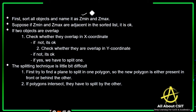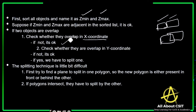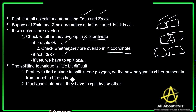Sort all objects and label them with z-minimum and z-maximum values. If z-minimum and z-maximum are adjacent in the sorted list, they are not overlapped and can be painted easily. If two objects are overlapped, first check whether they overlap in the x coordinate — if not, no problem. Then check the y coordinate — if not overlapped, it's fine. If they overlap in x or y, we must split one polygon. Find a plane to split the polygon so the new polygon is either in front of or behind the other. If polygons intersect, they must be split by the other polygon.